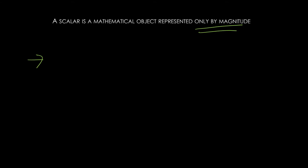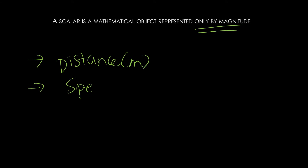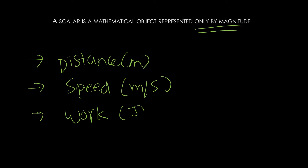What is a scalar? A scalar is a mathematical object represented by magnitude only. Some examples of scalars are: distance, measured in meters; speed, measured in meters per second; work, measured in joules; and temperature, measured in Celsius, Fahrenheit, or Kelvin.